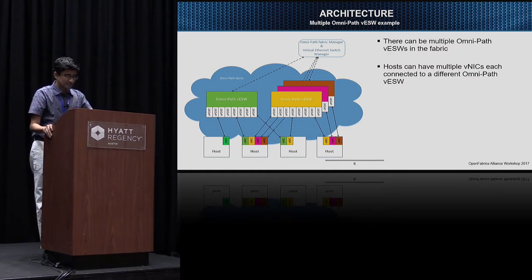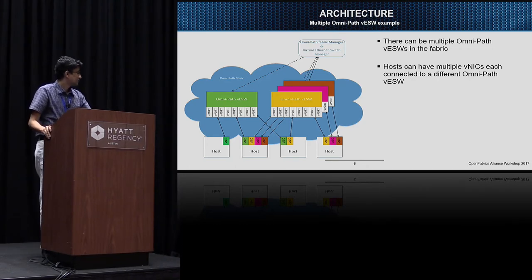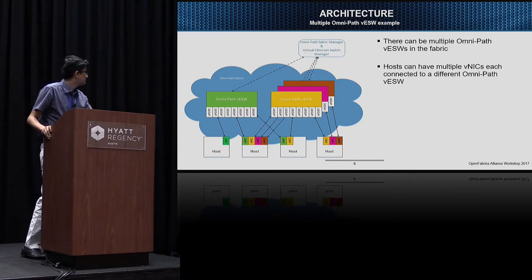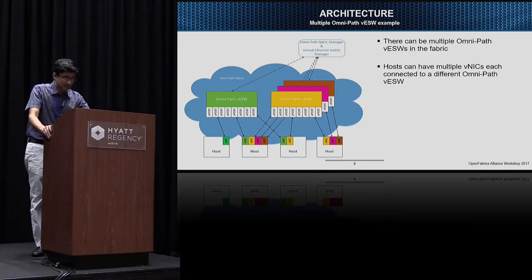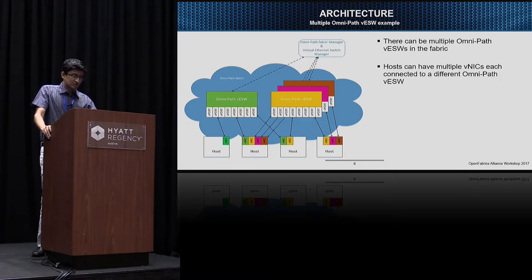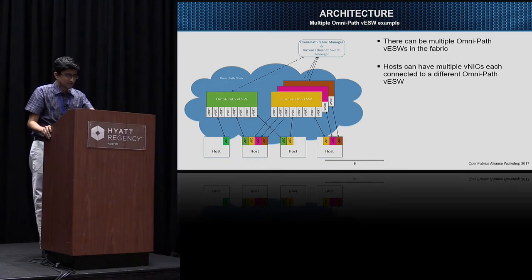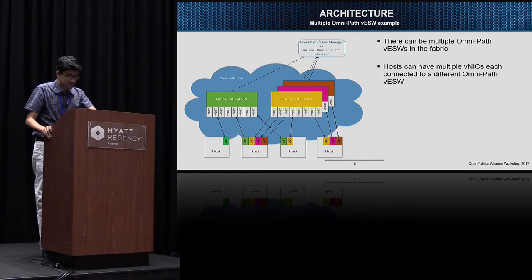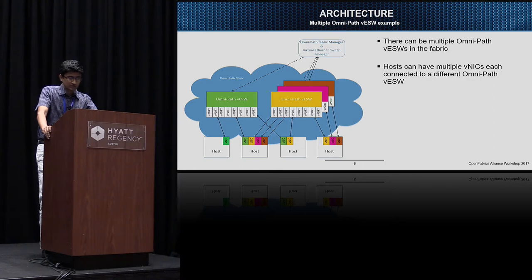Here we have a slightly more complicated example with more than one virtual Ethernet switch depicted in different color codes, connected to a bunch of hosts at the bottom. As you can see, a host can have more than one virtual NIC, and each virtual NIC on the host is connected to a separate virtual Ethernet switch. For example, the second host from the left has four VNICs, each connected to a different virtual Ethernet switch with matching color codes.